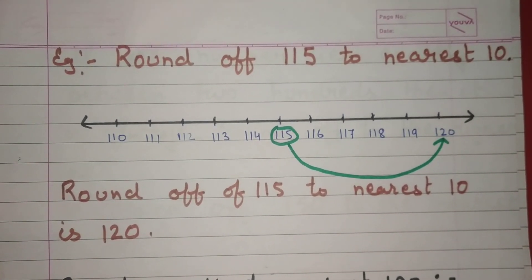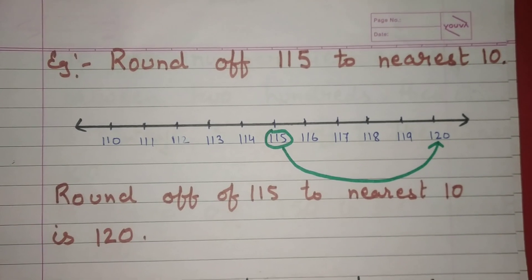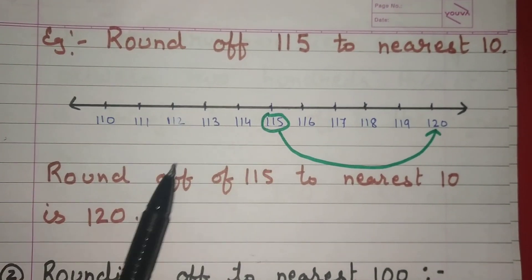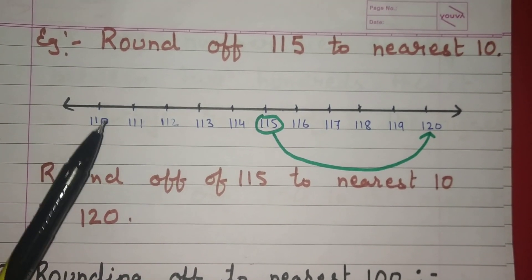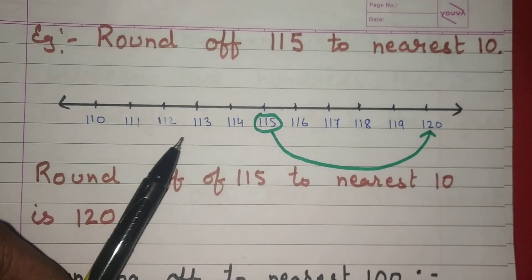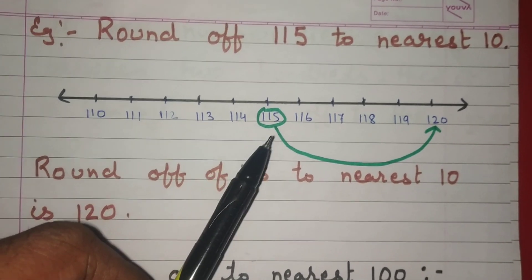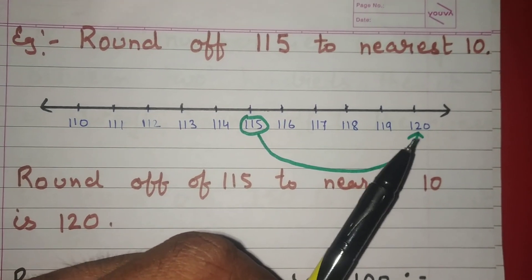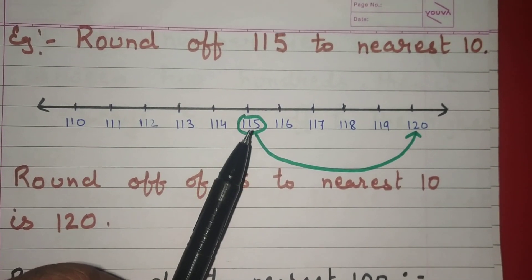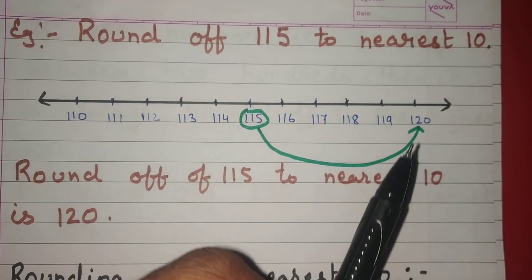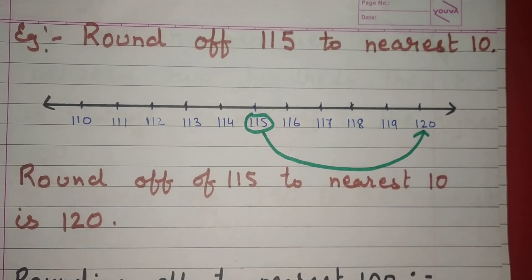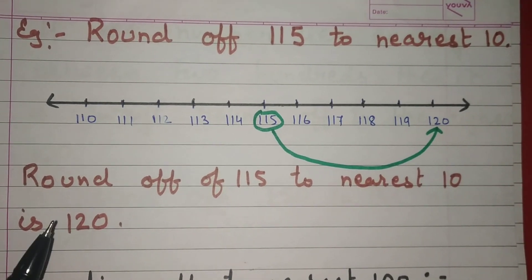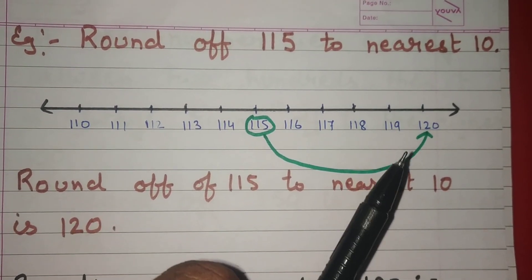Let's take one more example: round off 115 to nearest 10. When we put 115 on the number line starting from 110 — 111, 112, 113, 114, 115, 116, 117, 118, 119, 120 — 115 is exactly between 110 and 120. So the round off of 115 to nearest 10 is 120, because 120 is the higher 10.